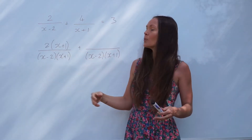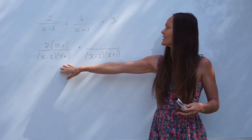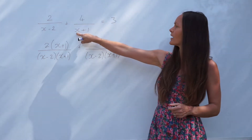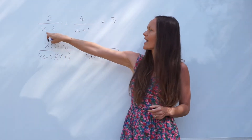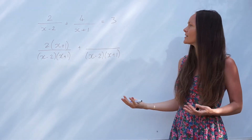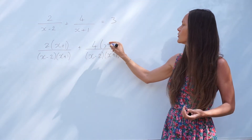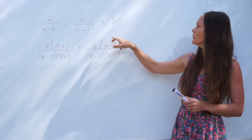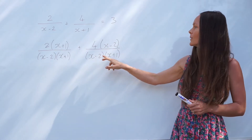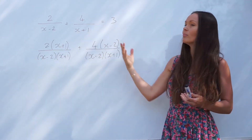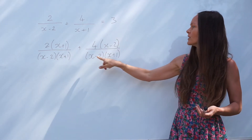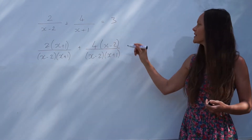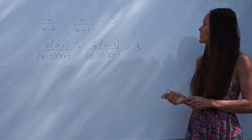It's the same fraction — we're just rewriting it in a different way so that later we can add the two fractions together. On the second fraction, we've multiplied the denominator by x minus 2, so we have to do the same with the numerator — multiply that by x minus 2 as well. We're timesing this fraction by 1 again, written in the form x minus 2 divided by x minus 2. So it hasn't changed — it's an equivalent fraction. And it's still equal to 3, which is the equation we need to solve.